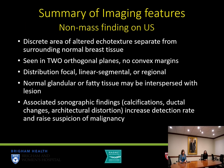When looking for non-mass findings on ultrasound, we're looking at a discrete area of altered echotexture that looks different from the surrounding normal breast tissue. We want to confirm it in two orthogonal planes, and it should have no convex margins to ensure it's a true finding. Distributions vary and can include focal, linear, segmental, or regional. Similar to non-mass enhancement on MRI, normal glandular or fatty tissue can be interspersed within the lesion. Associated sonographic findings — calcifications, ductal changes, or architectural distortion — increase detection rate and raise suspicion for malignancy.